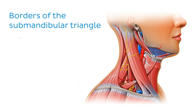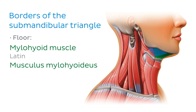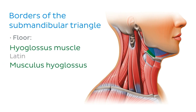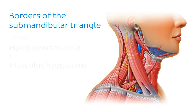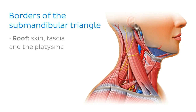The floor of the submandibular triangle is made by the mylohyoid muscle, as well as the hyoglossus muscle, which also forms the floor of the oral cavity. The triangle is also covered by the skin, fascia, and the platysma, which is the thin superficial muscle of the neck. The covering or the roof of all the triangles will be the same.